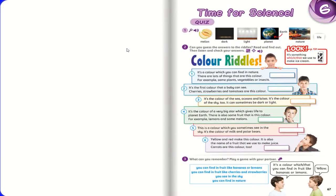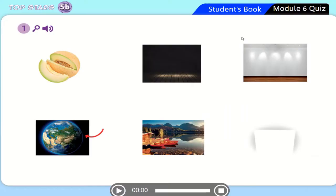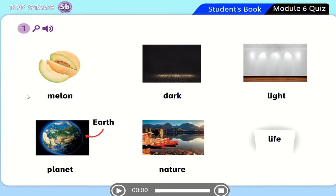Open your student book on page 67, module 6 — Time for Science. We have a quiz. Let's start with the vocabulary. We have six new words to learn, and they are very easy. We have: melon, dark, light, planet — and our planet is planet Earth — nature, and life.